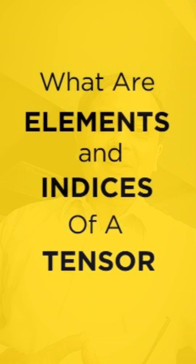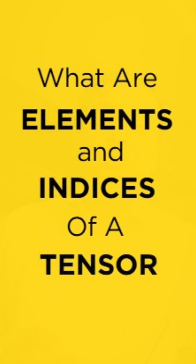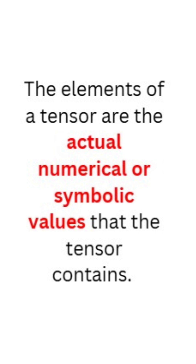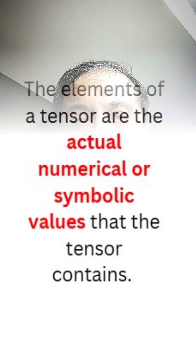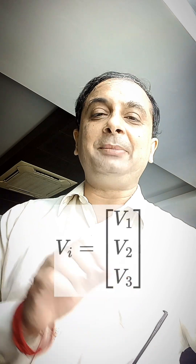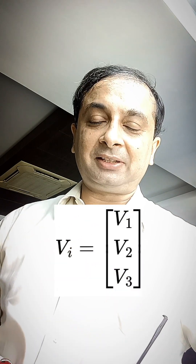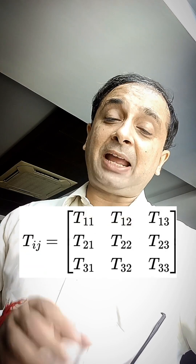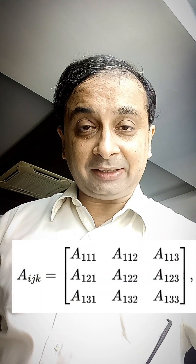The elements of a tensor are what comprises within the tensor. For a rank 1 tensor, the element would look something like this. A rank 2 tensor will have an element like this, and a rank 3 tensor would have an element like this.